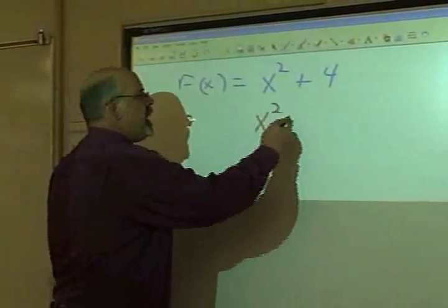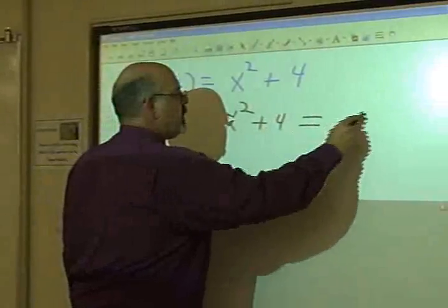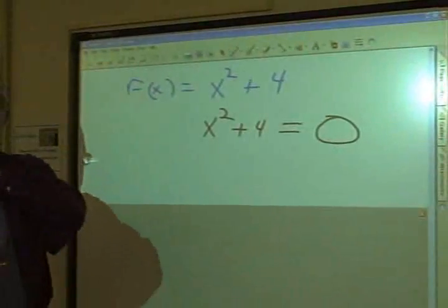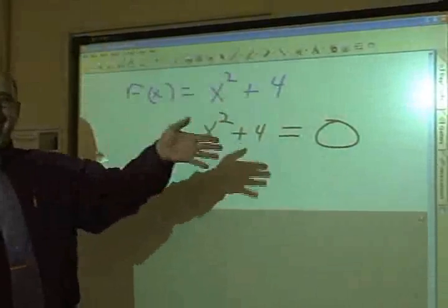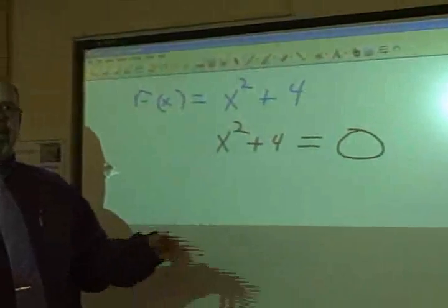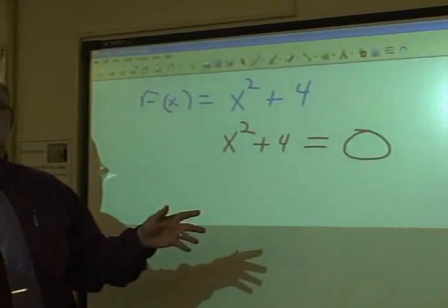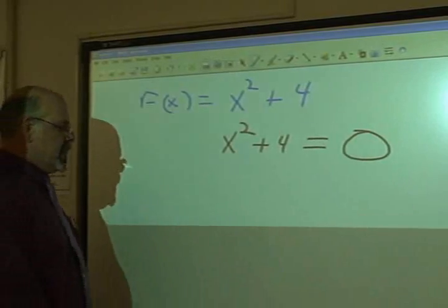In order to find that, you must set it equal to 0, because when it equals 0, that is actually crossing the y-axis at its 0. So you set it equal to 0.